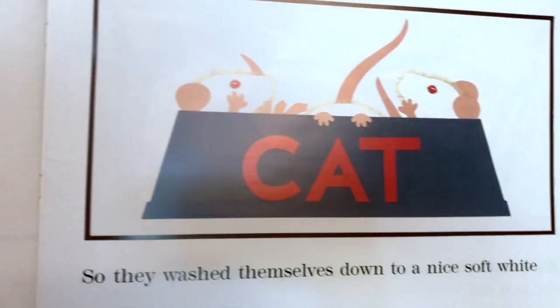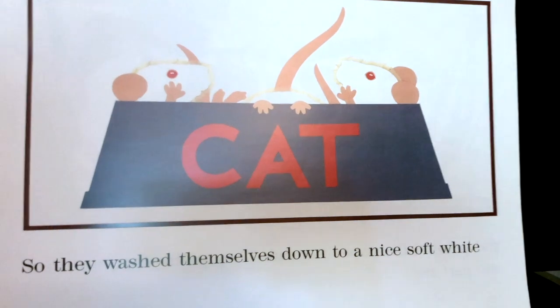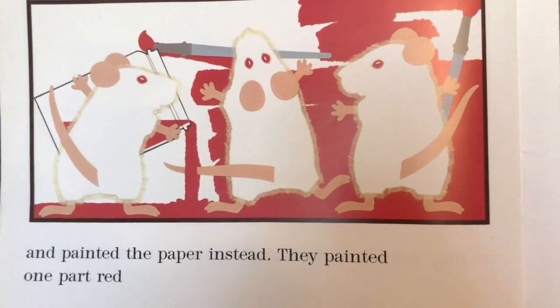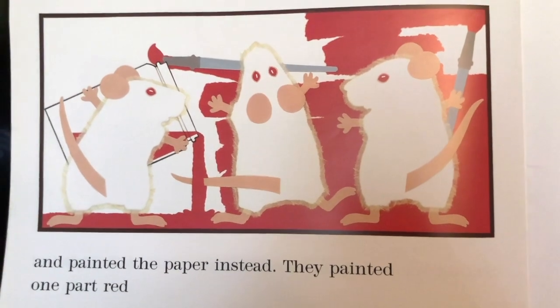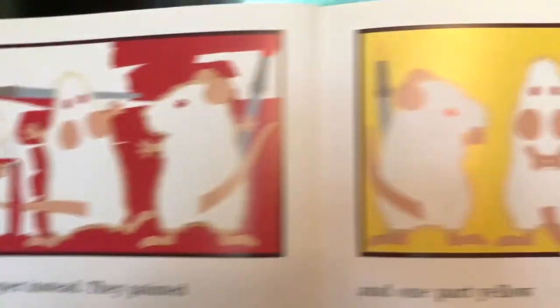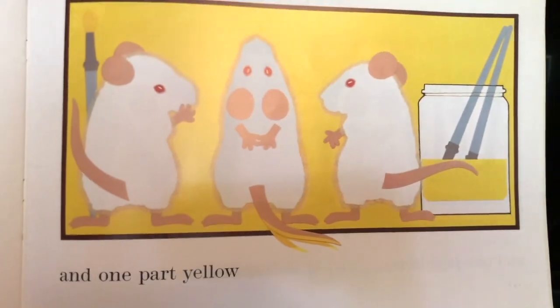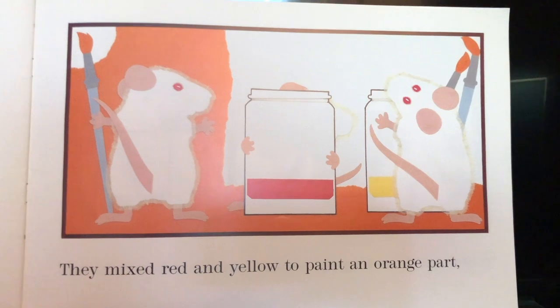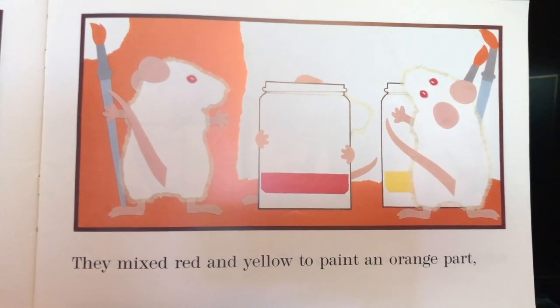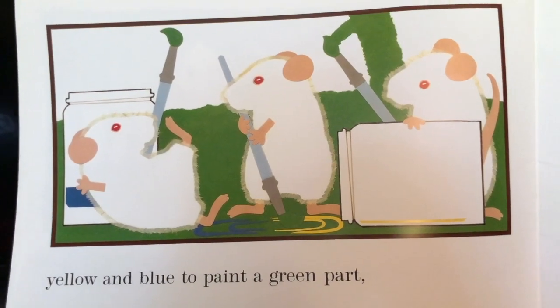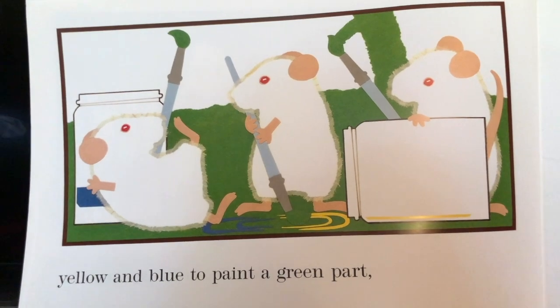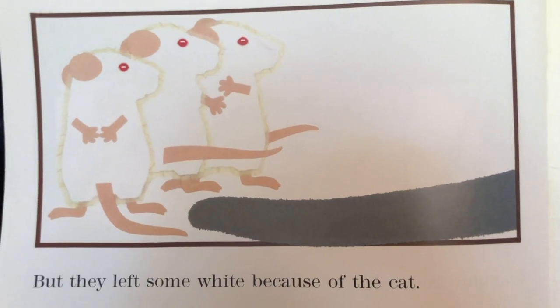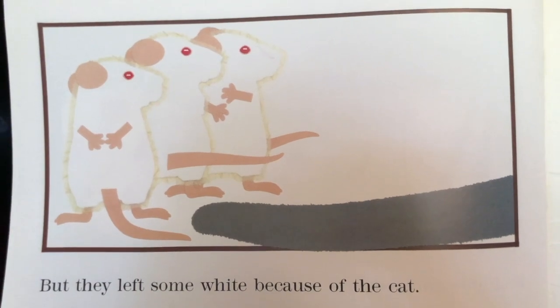So they washed themselves down to a nice soft white and painted the paper instead. They painted one part red and one part yellow. They mixed red and yellow to paint an orange part. Yellow and blue to paint a green part. Blue and red to paint a purple part. But they left some white because of the cat.